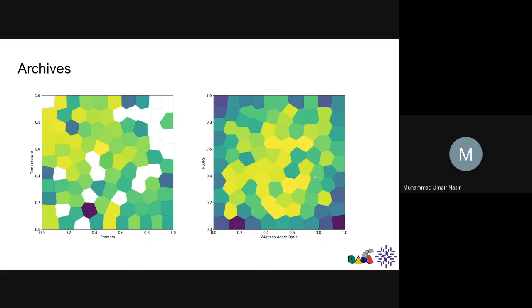The yellow cells are higher performing and the darker ones perform less. We find networks with lower FLOPs and with the width-to-depth ratio closer to equal width-to-depth, which is obviously rare, but we do find good networks there. We also find good networks in the normal width-to-depth ratio range. So this behavioral descriptor should be applicable to any other benchmark. On the left, we have prompt individuals, which include prompts and temperatures.